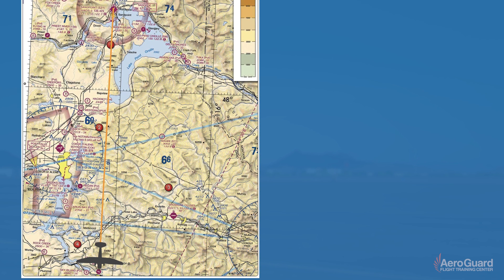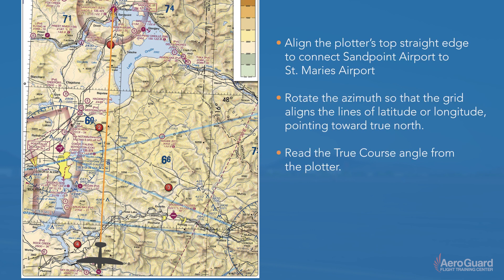Next, we can measure this true course using the plotter. To do that, we'll simply align the top edge of the plotter along the course line, and then rotate the wheel until the grid lines are aligned with either a line of latitude or a line of longitude. In this case, we're following our arrow and the true course is approximately 181 degrees.